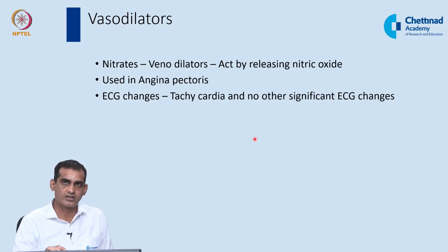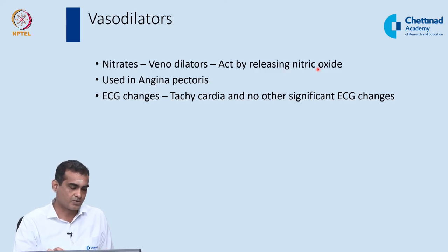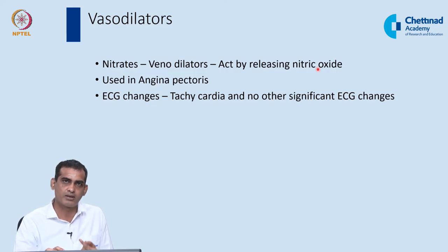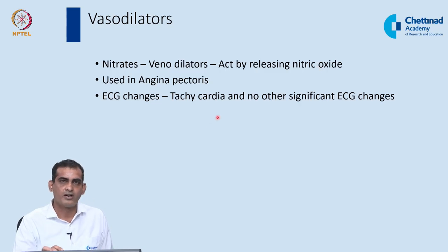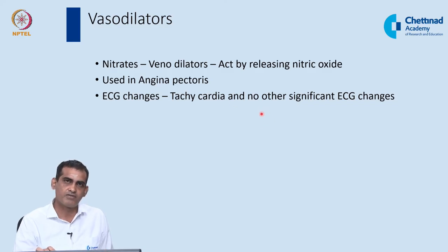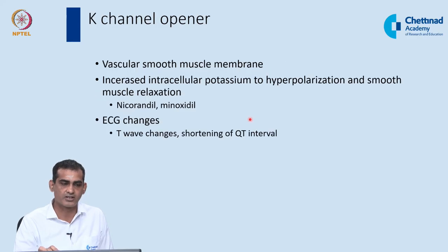Nitrates, unlike calcium channel blockers and alpha-1 blockers, are predominantly venodilators — dilating both larger and smaller veins by releasing nitric oxide. Used in angina, they are given sublingually for immediate chest pain relief; venodilatation reduces venous return, decreases cardiac workload, and relieves anginal pain. Nitrates mainly cause tachycardia and are otherwise relatively safe with no significant electrophysiological ECG changes.